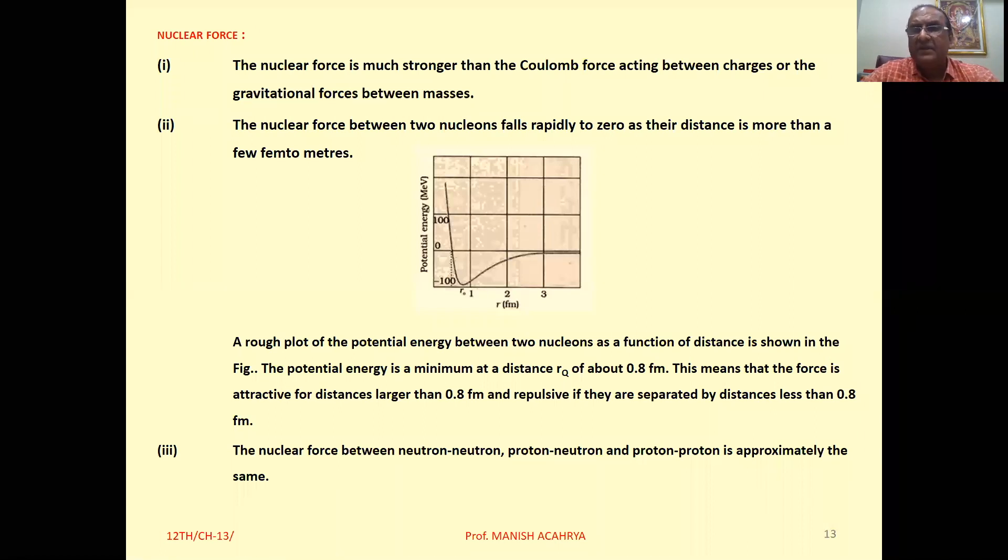How can we see here? Nucleus is made by protons and neutrons. Neutrons are electrically neutral. Protons are positively charged particles.